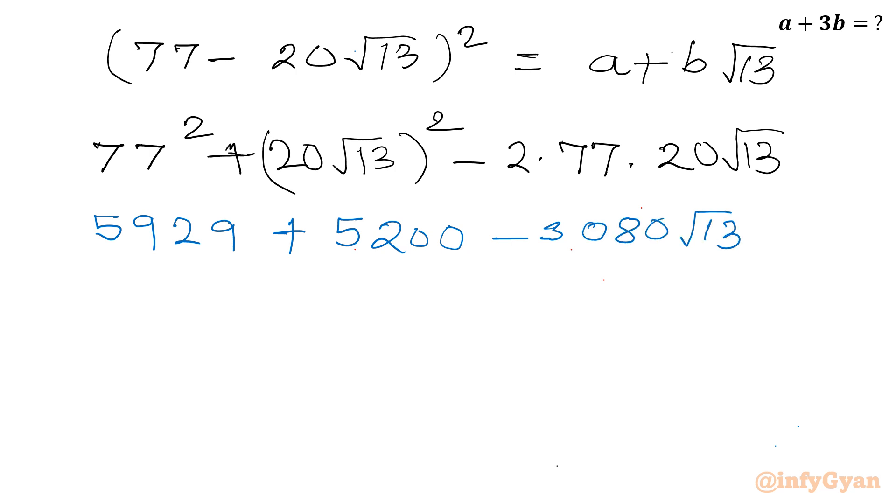So if I will add, I will be getting 11129 minus 3080 root 13. Now if I will write equal to a plus b root 13. After comparing I can conclude a is equal to 11129, and b is negative, minus 3080.